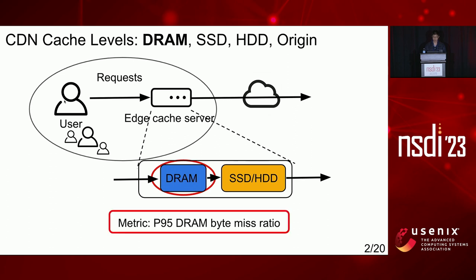Our metric is the P95 DRAM byte miss ratio. We choose P95 because it corresponds to the byte miss ratio during the peak hours, when the system is bottlenecked.